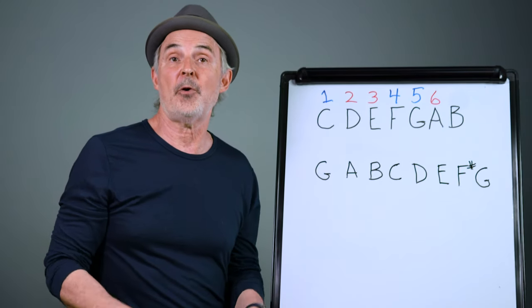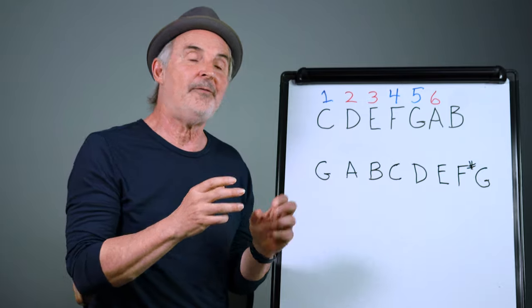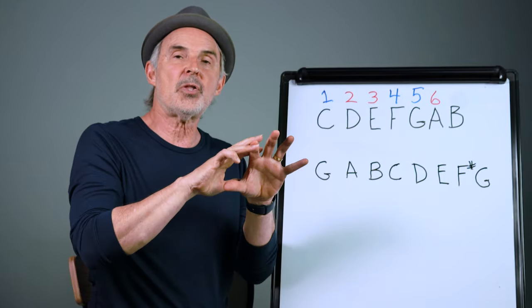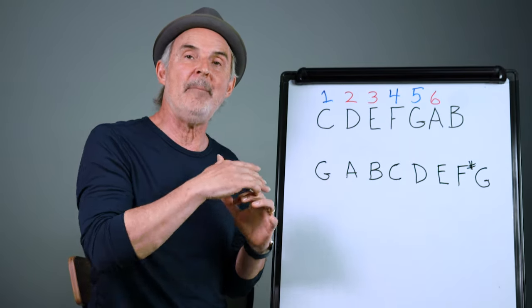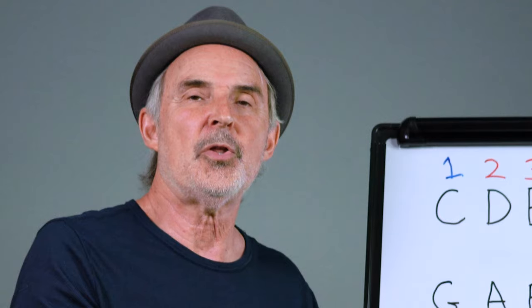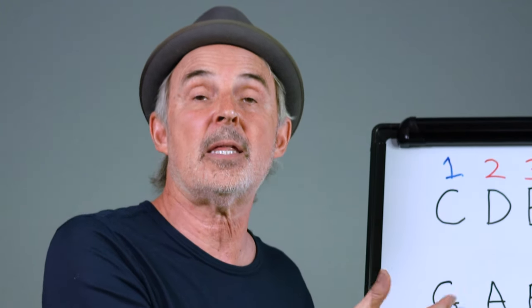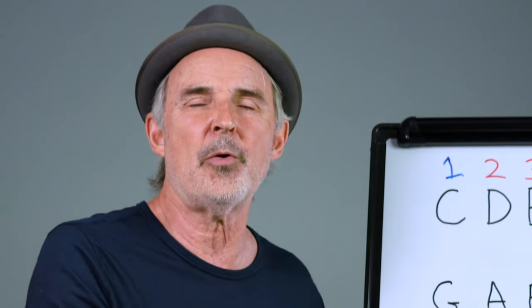Now if you say something is for example in the key of C, what you're actually saying is that if you took this group of notes, that song revolves around that group of notes. The melody is basically comprised of those notes. The chords are comprised of those notes. So if you say it's in the key of C, you're using notes from the C scale to make up the song for the most part.